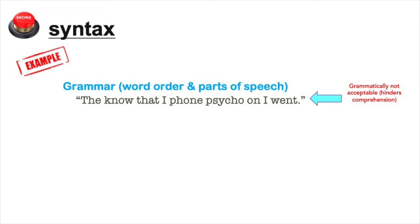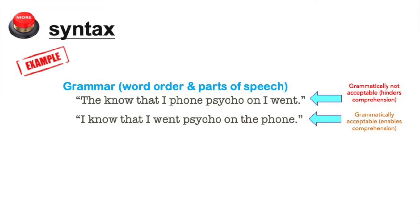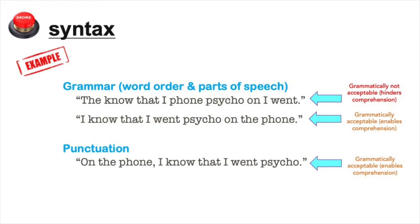Here are some examples of why understanding syntax is important to comprehension and effective communication skills. Because there are rules that govern word order in English, this first sentence doesn't make much sense and is not easily understood. But the second sentence — with the exact same words in a different order, one that follows standard English grammar and syntax — does make sense. We can also rearrange the sentence again, and thanks to punctuation, the sentence can still make sense.